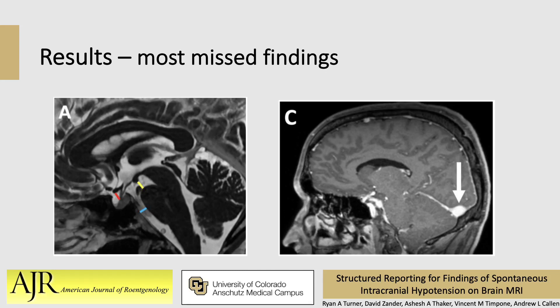Additionally, we looked at the most commonly missed findings among discordant reports, and they were quantitative in nature and included effacement of prepontine cistern distance, supracellar cistern distance, and mamelopontine interval, indicated by the blue, red, and yellow markers. They were then followed by the qualitative component of venous engorgement in image C indicated by the white arrow.